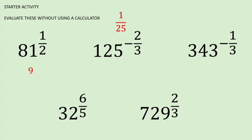Moving on to the example on the top right: 343 to the power of negative 1 third. Here we have to do the cube root of 343, which is 7, and then take the reciprocal. So that gives us 1 over 7.